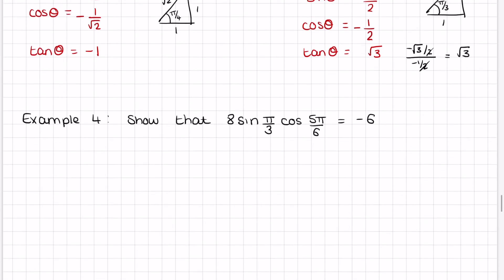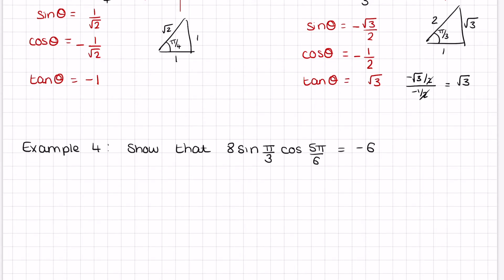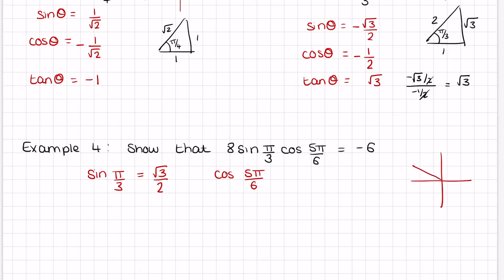Example 4: show that 8 sin(π/3) cos(5π/6) = −6. Find each value first. Sin(π/3) = √3/2 from the π/3 triangle. For cos(5π/6): on the unit circle, 5π/6 is in the second quadrant, and the angle to π is just π/6, so this is a π/6 angle. The cos of π/6 is adjacent over hypotenuse = √3/2, but in the second quadrant cos is negative, so cos(5π/6) = −√3/2.